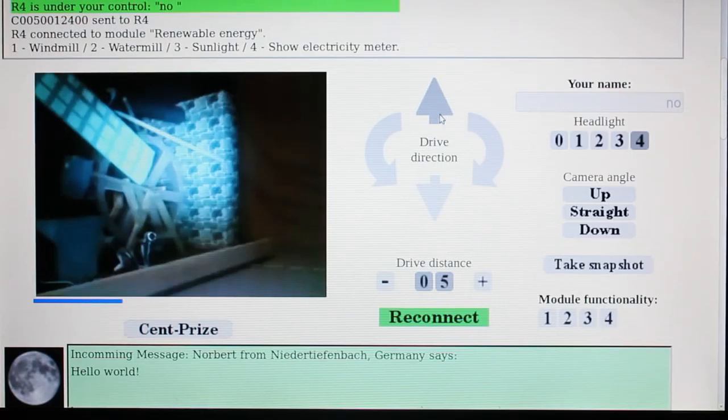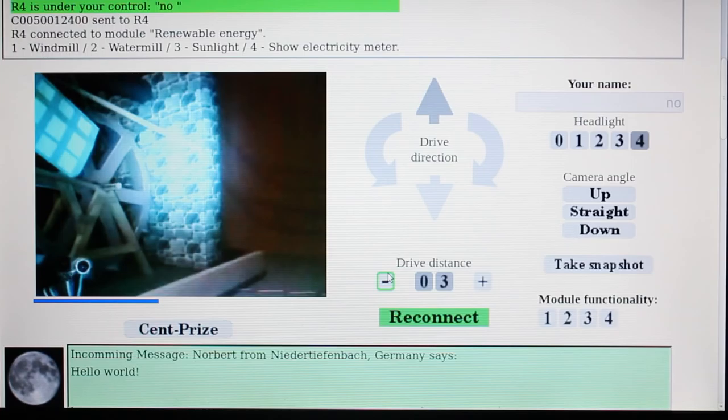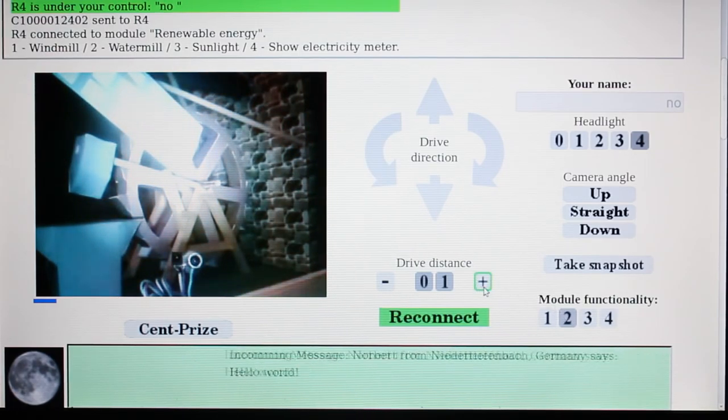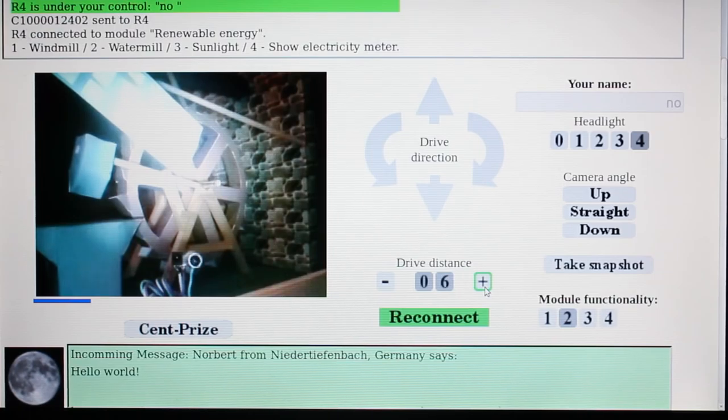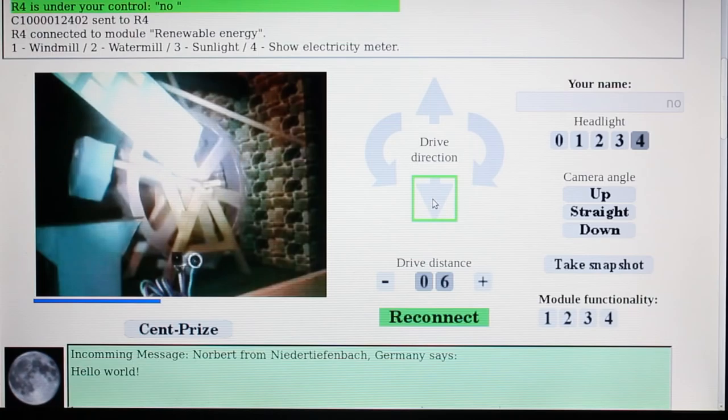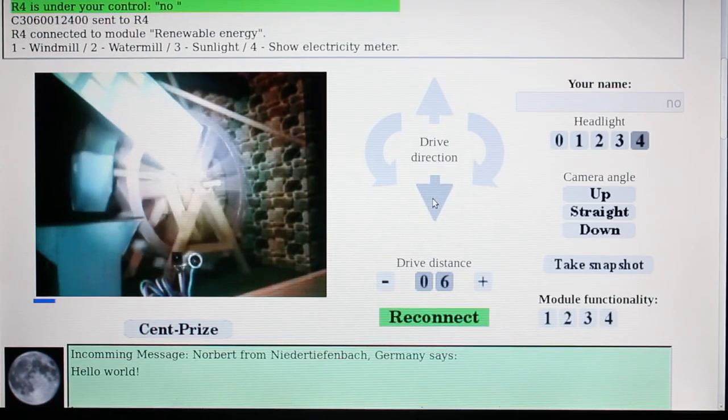You can discover what's inside this box on my project page using nothing but your browser. In contrast to the single images that are transmitted by my old robots, R4 transmits a live video stream using MJPEG. Thus you need a browser that supports MJPEG streams to control that robot.